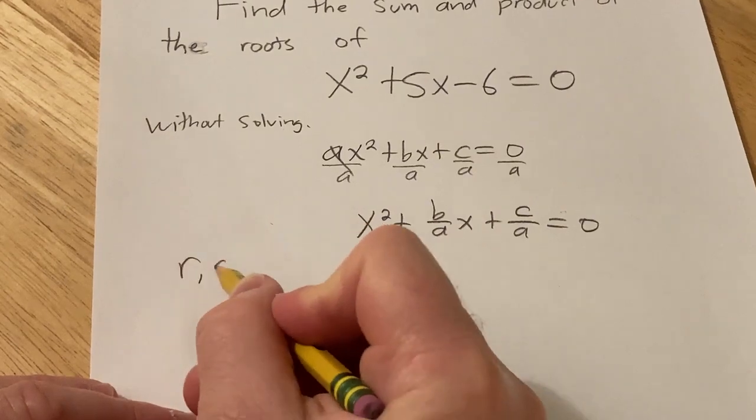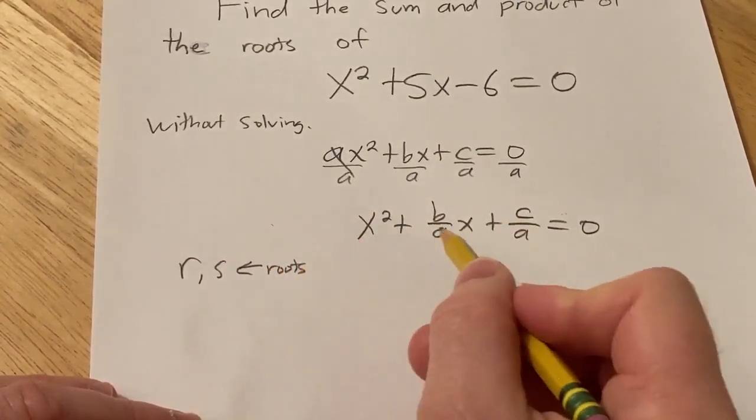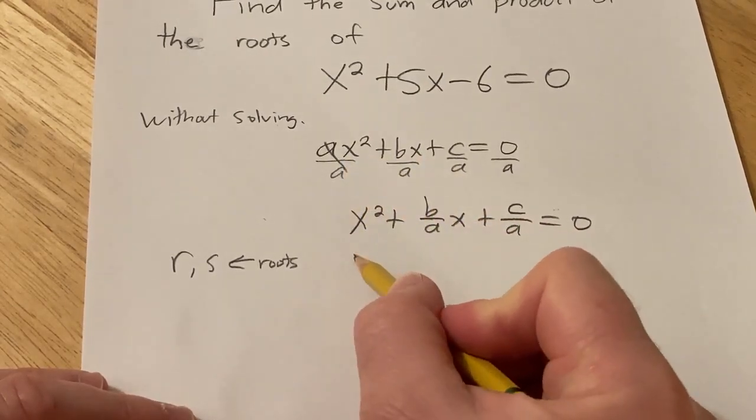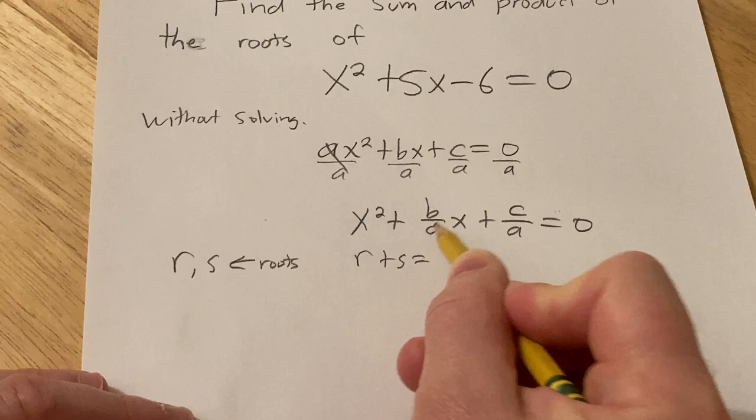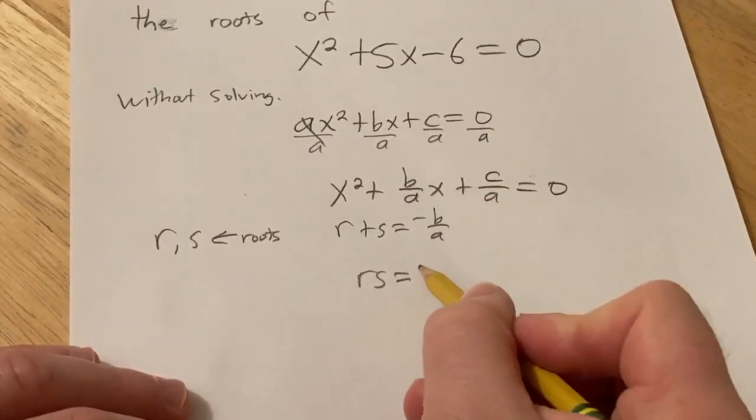And now if r and s, if these are your roots, then a really cool memory trick is you just take this, divide it by a, and then the sum of the roots is going to be the opposite of this, and the product of the roots is going to be this.